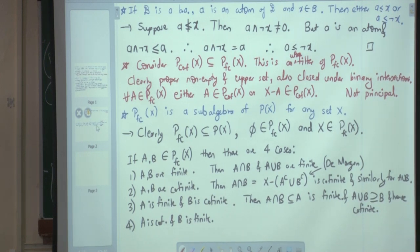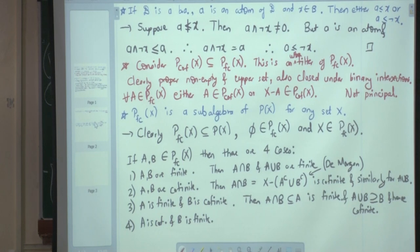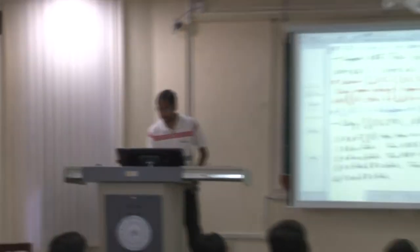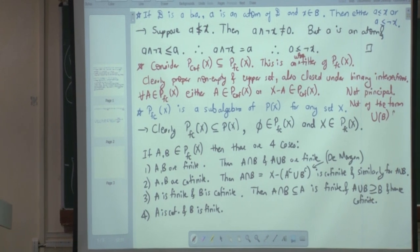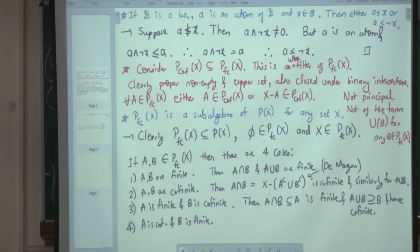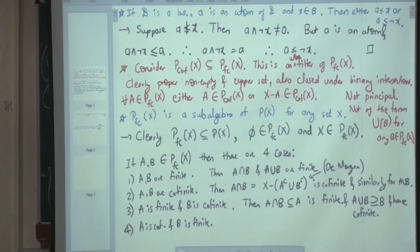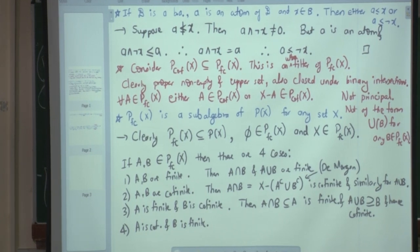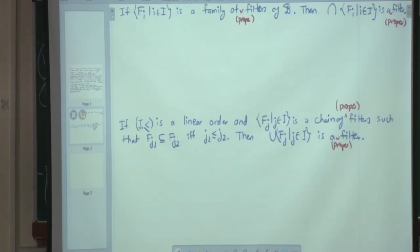This is your first example of a non-principal ultrafilter. Non-principal means it is not of the form U(B) for any single element B. These non-principal ultrafilters will be useful later in the logic part of the course.